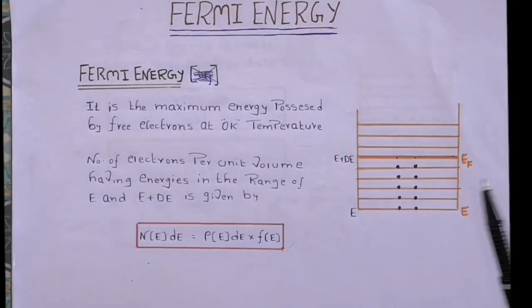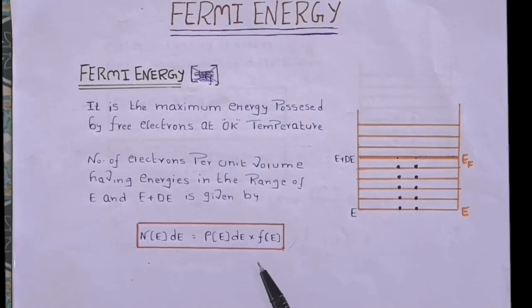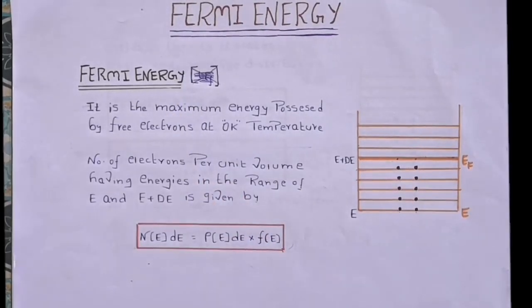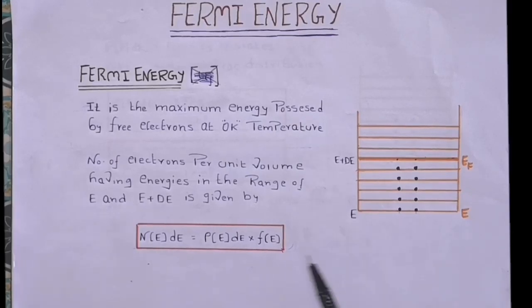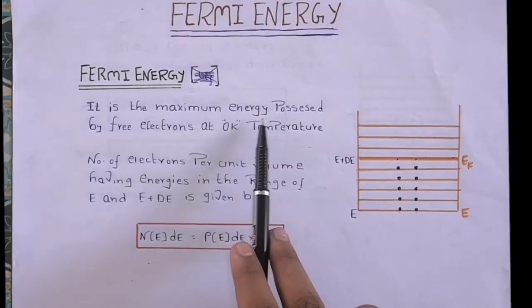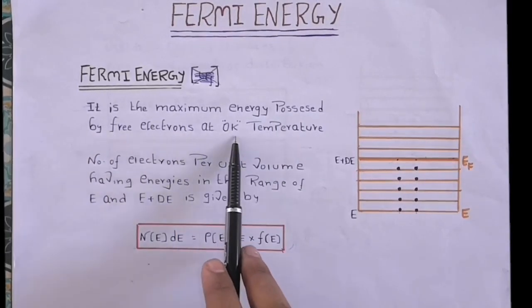Hello friends, welcome to my channel. Today in this video we are going to study about Fermi energy and the derivation of Fermi energy. Fermi energy is the maximum energy possessed by free electrons at absolute zero temperature, at zero Kelvin.